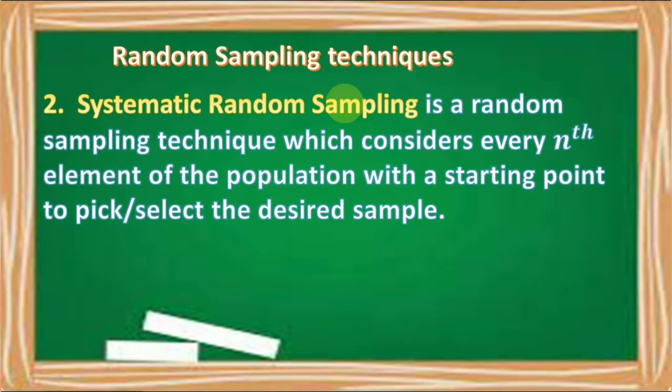The second type is the systematic random sampling. The systematic random sampling is a random sampling technique which considers every nth element of the population with a starting point to pick or select the desired sample.